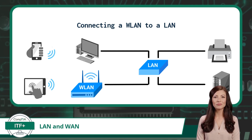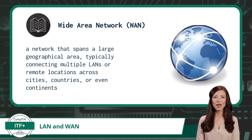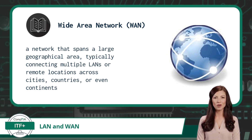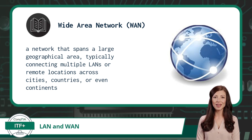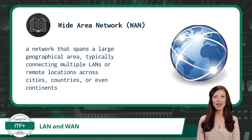Now we can move on to WANs, or wide area networks. WANs cover a much larger area than LANs or WLANs. A WAN is a network that spans a large geographical area, typically connecting multiple LANs or remote locations. WANs are used to connect networks across cities, countries, or even continents. They enable long-distance communications and data exchanges between geographically dispersed sites. The internet itself can be considered a massive WAN, connecting networks worldwide.